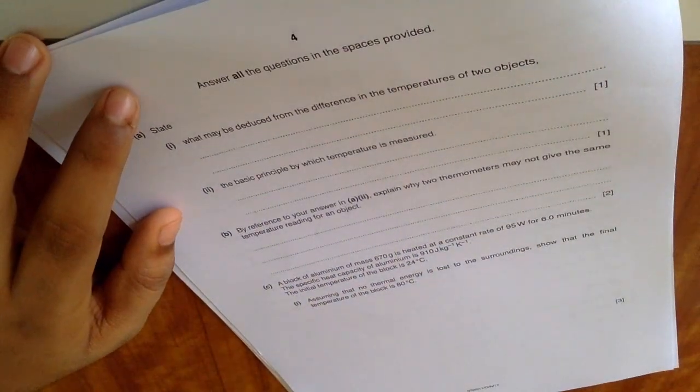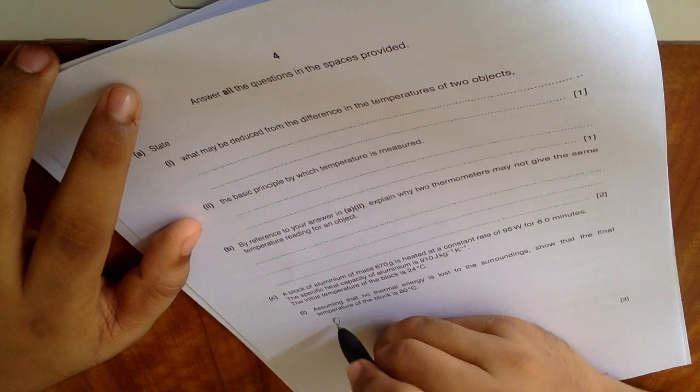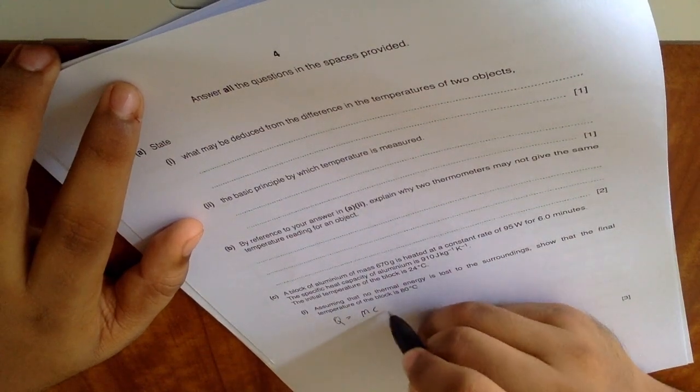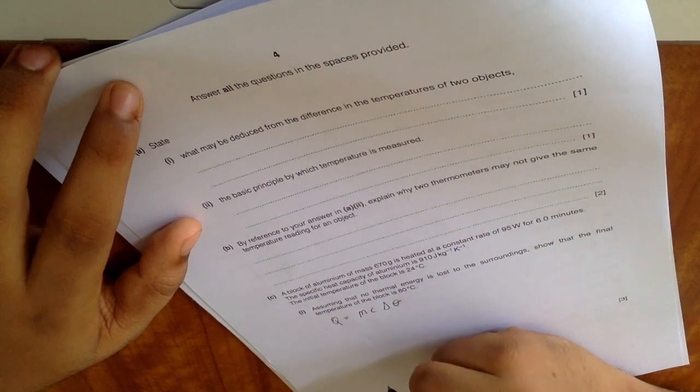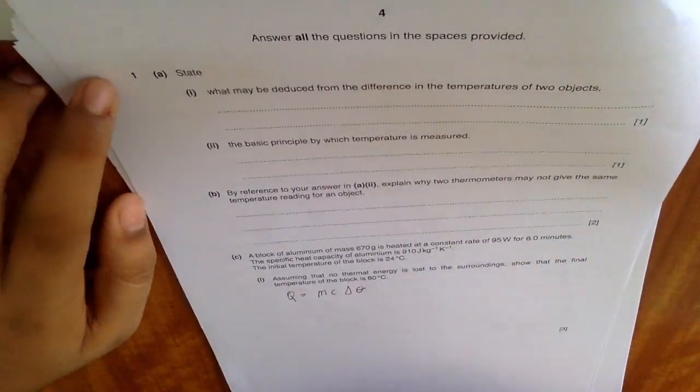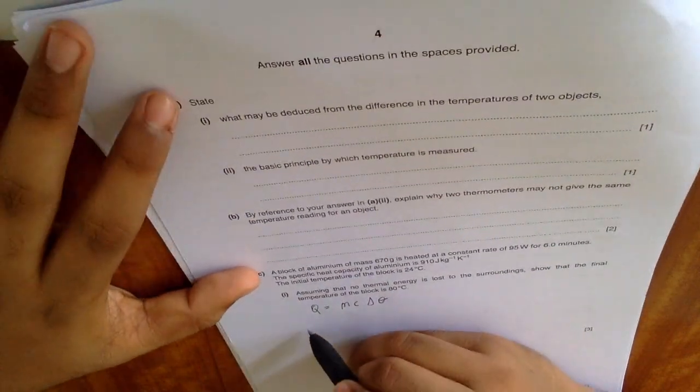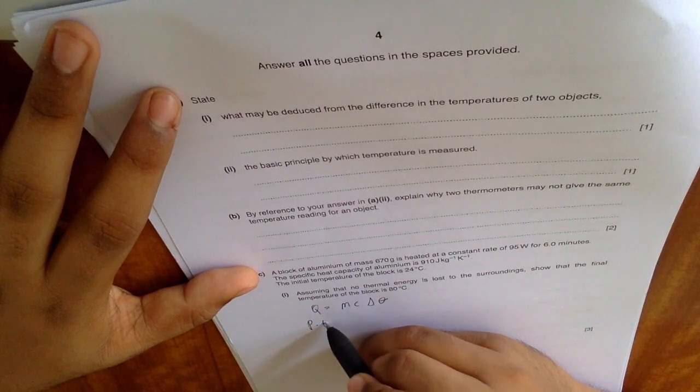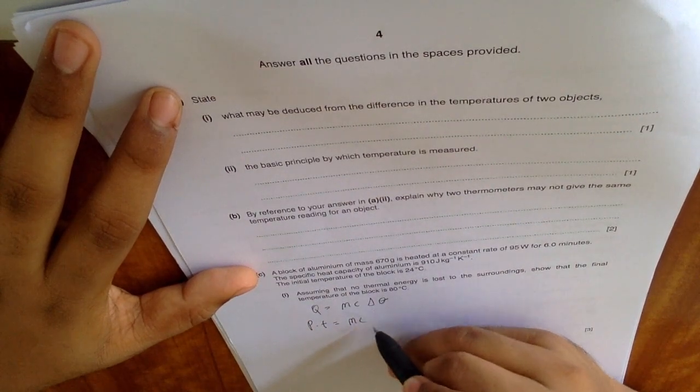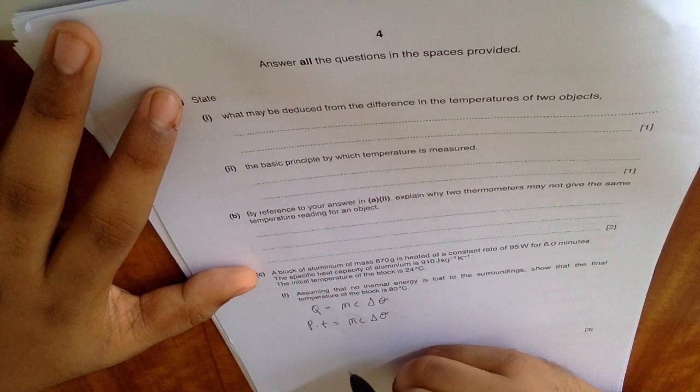Okay, so Q is equal to mc delta theta, right? Q is actually power times time, so is equal to mc delta theta.